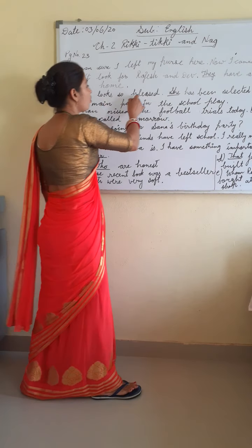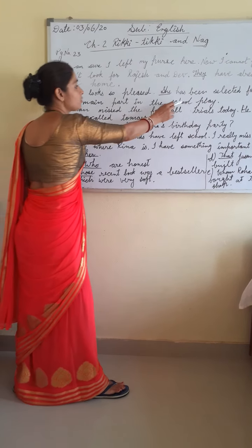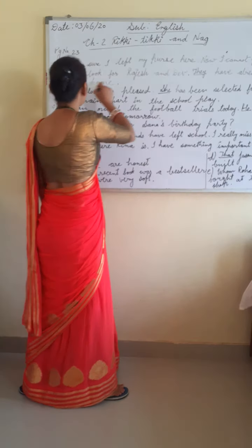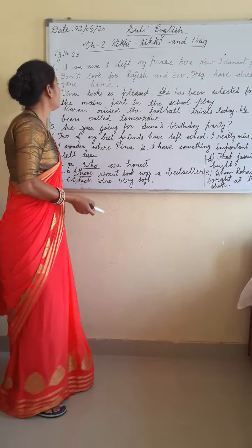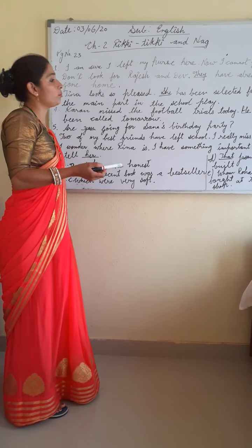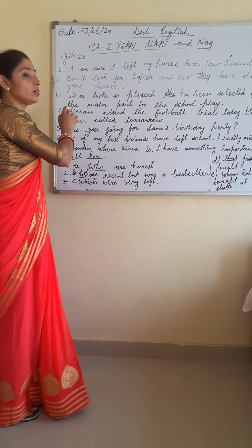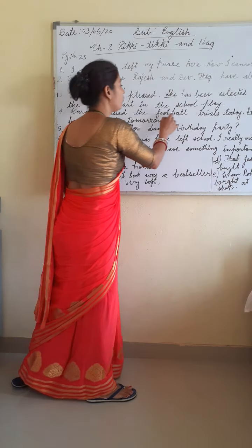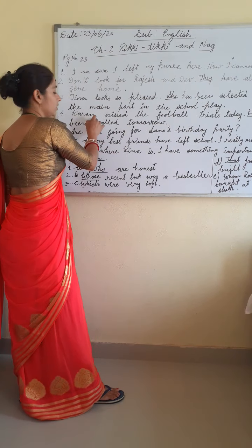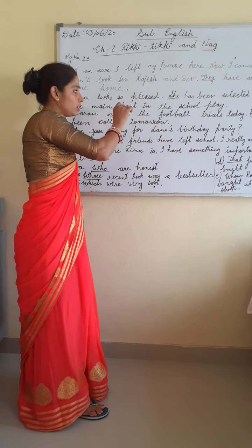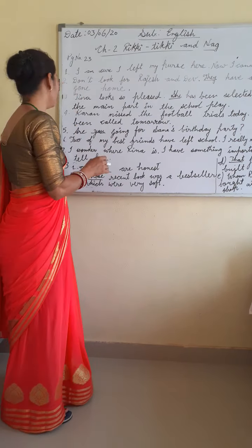Sentence 3: Tina looks so pleased — 'pleased' means happy. Blank has been selected for the main part in the school play. Tina is your noun; instead of that you will use 'she.' For feminine gender we use the pronoun 'she,' for masculine gender we use 'he.' So here you will use 'she.' Sentence 4: Karan missed the football trials today. Blank has been called tomorrow. Karan is your noun and this is masculine gender, so we use 'he' — he has been called tomorrow.